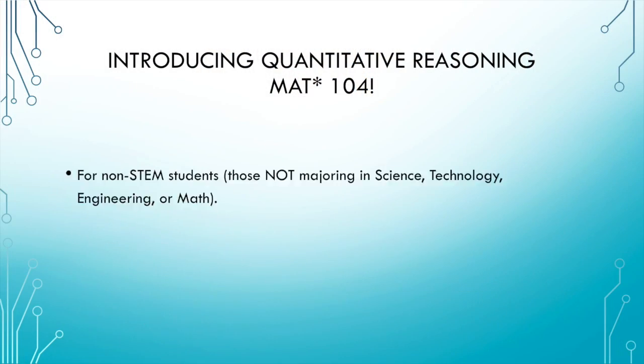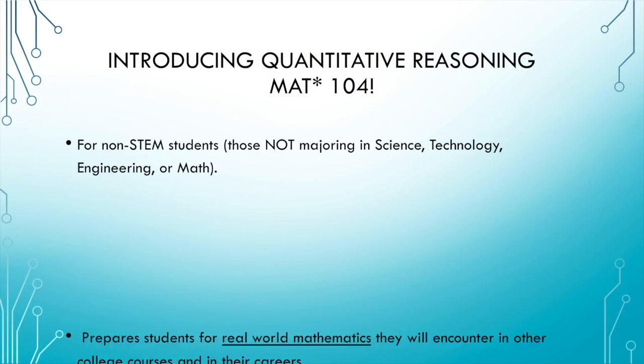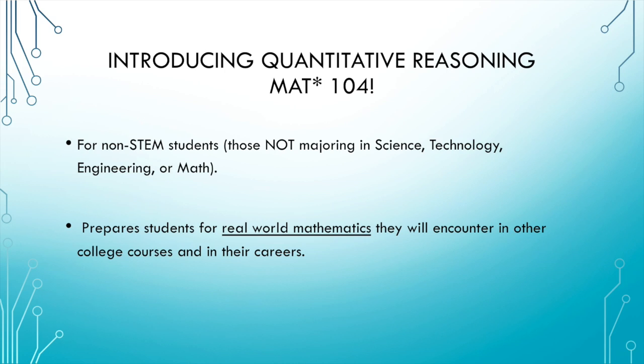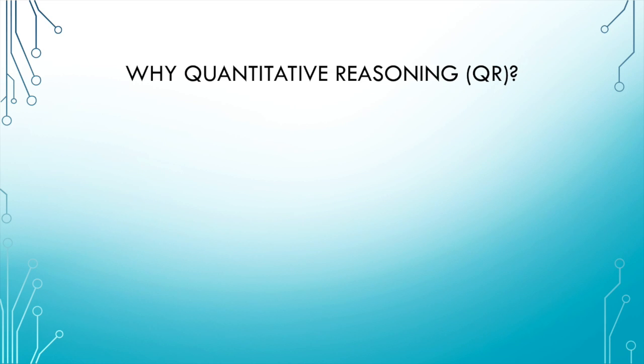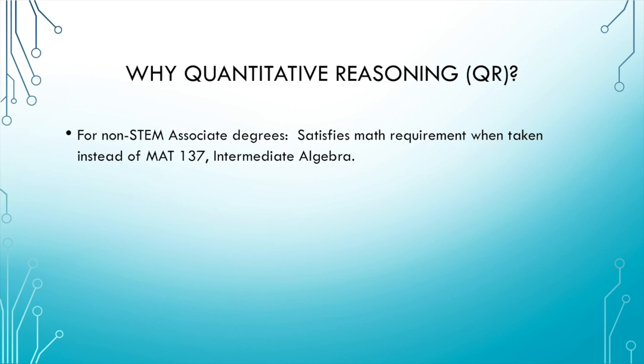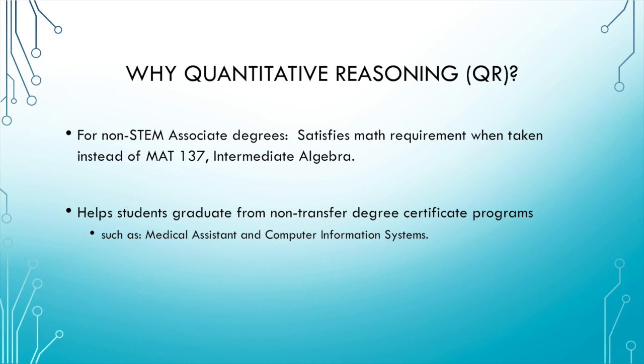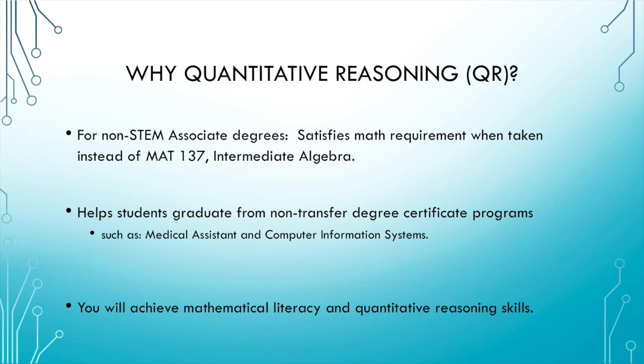How would you like to take a new and exciting math course at USATONIC Community College? Oh, I don't know — what is it? It's called MAT 104 Quantitative Reasoning. It's a new math course being offered Fall 2014. What is it about? It's a mathematics course for non-STEM students all about the useful, fun, and real-world math problems that you'll encounter in your career. The best part is it also satisfies your math requirement for graduation and can be taken instead of MAT 137 Intermediate Algebra.